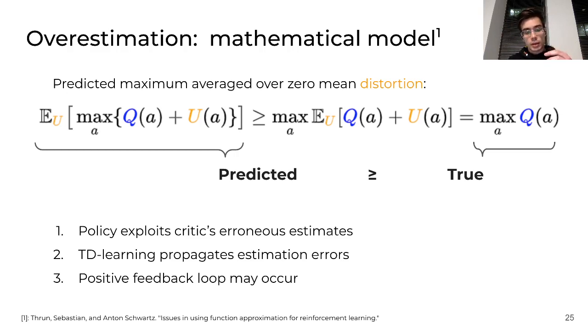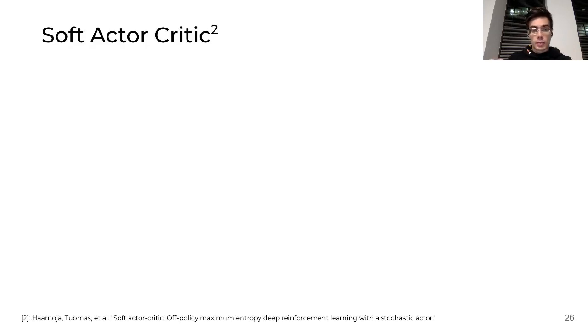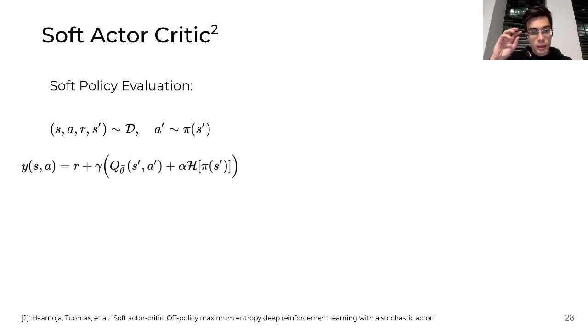Let's start with the existing methods, namely Soft Actor Critic. Let's focus on the soft policy evaluation, the training of the critics. We sample some transition from the replay buffer and then plug it into the Bellman equation, regularized with the entropy term. Then this target function is used as the regressor. We try to fit the approximation, approximate Q-function, to this target.